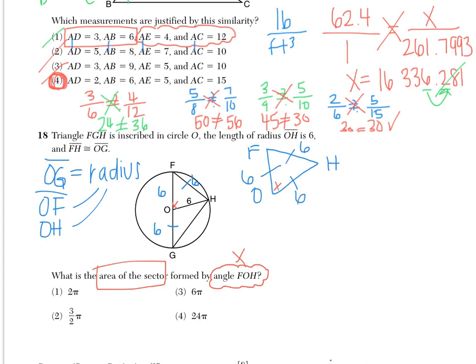Since triangle FOH is equilateral with three congruent sides, it has three congruent angles that all sum to 180 degrees, so angle FOH measures 60 degrees. A sector is like a pie slice, and I'm trying to find its area. The area of a sector is the area of the full circle, π r squared, multiplied by the portion of the circle we want — that is, the degree measure n divided by 360.